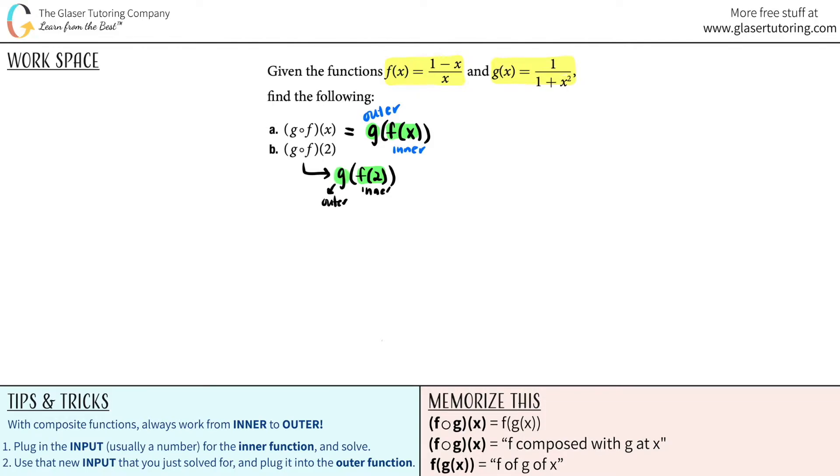Clearly f of 2 is the inner function and g is the outer function. Okay, so with composite functions you always work from the inner function to the outer function, and you can tell which one is which by looking at the parentheses. The one that's the most inside the parentheses is the inner function.